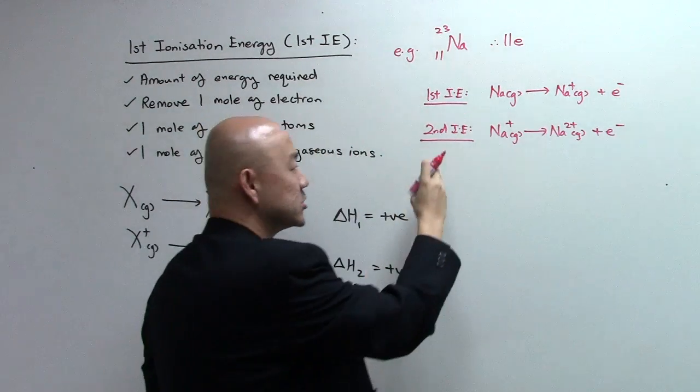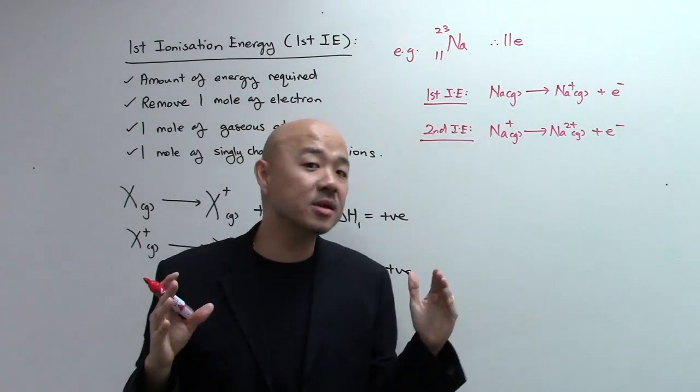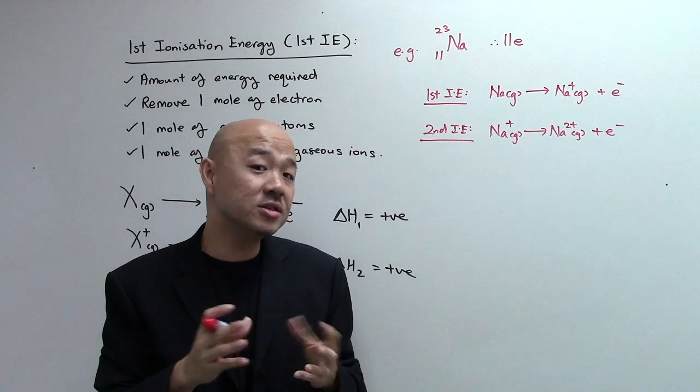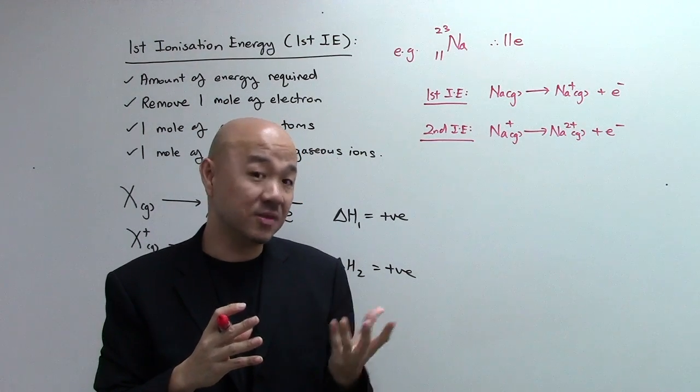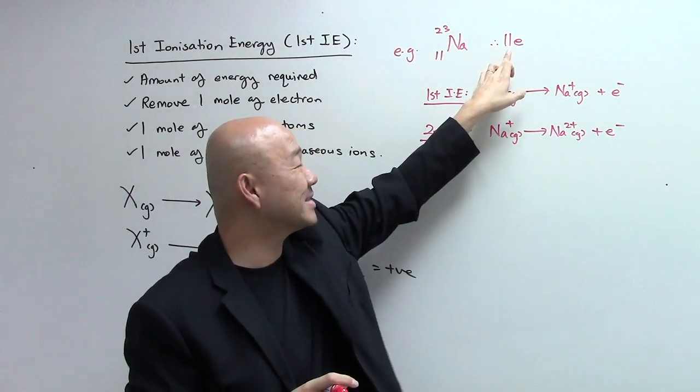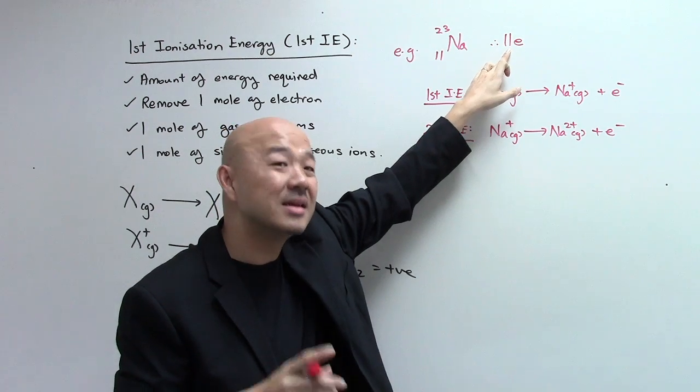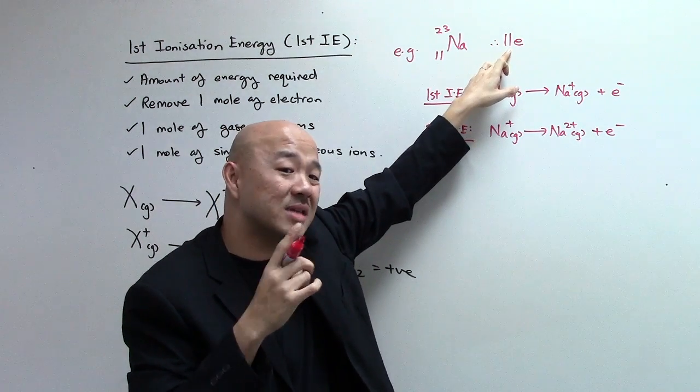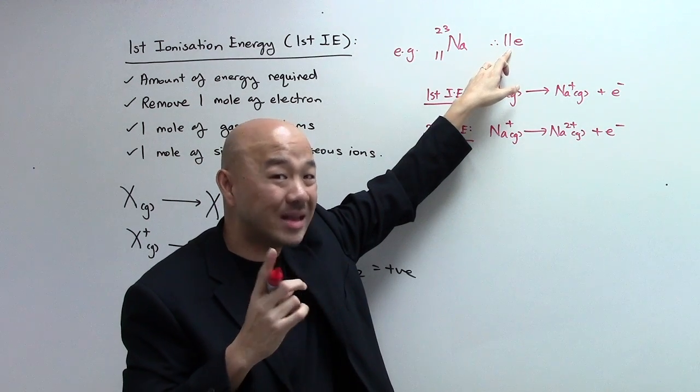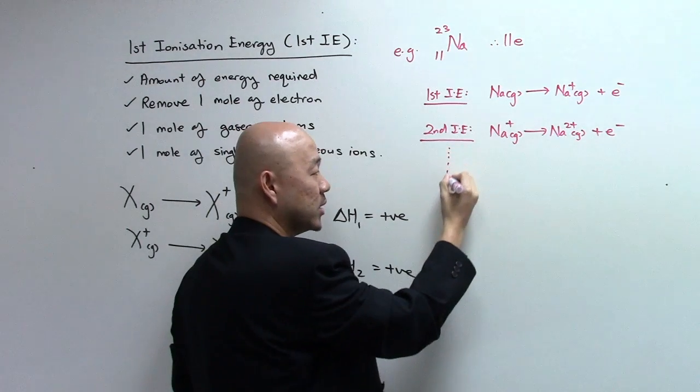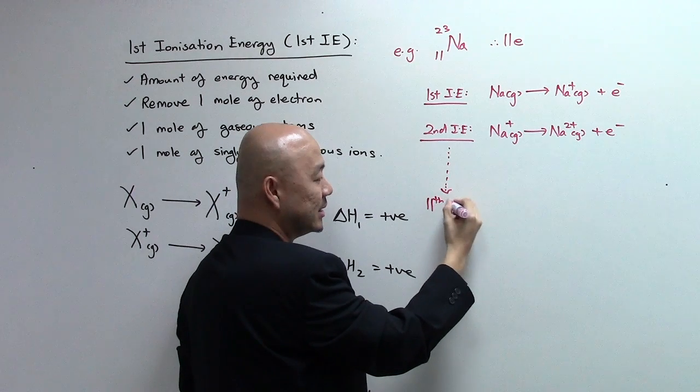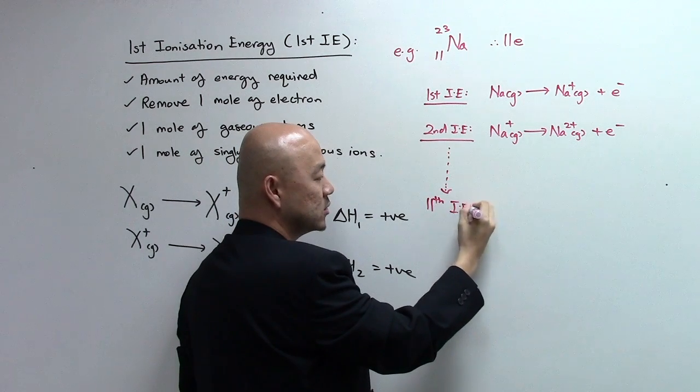Now, the possible questions that the examiner would love to ask is, what is the maximum IEs, ionization energies, that can be achieved for a certain element in the periodic table? So, for sodium, if you realize it has 11 electrons, it also means you can actually use energy to remove all 11 electrons one at a time.